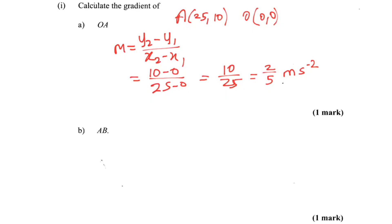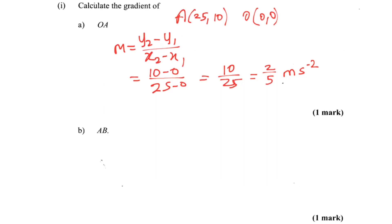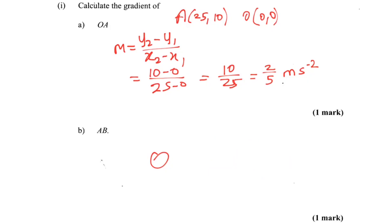Now the gradient of AB. That's a straight horizontal line, so the gradient is 0. Horizontal lines have no gradient — it's not going up, it's not going down. So the answer is just 0.